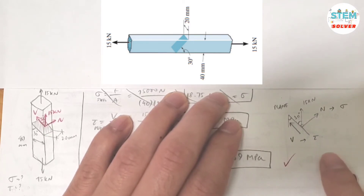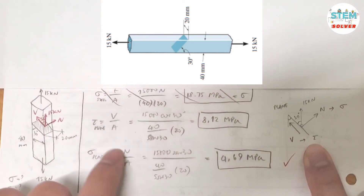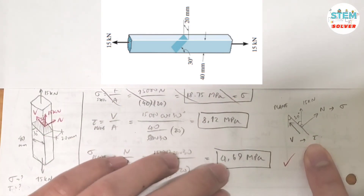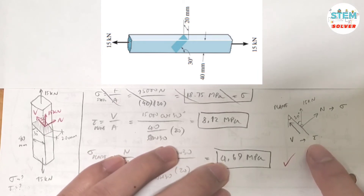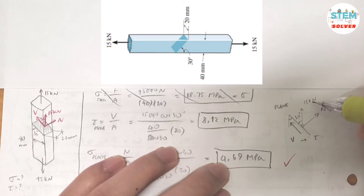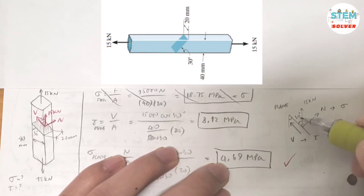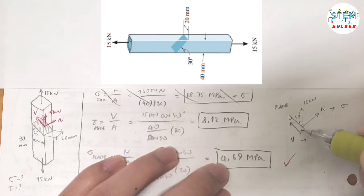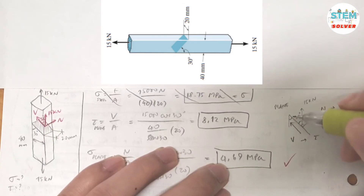The shear stress is equal to the shear force divided by the area. What is the shear force? The shear force is the x-component of the 15,000 N force, so that gives you 15,000 times cos(30°).